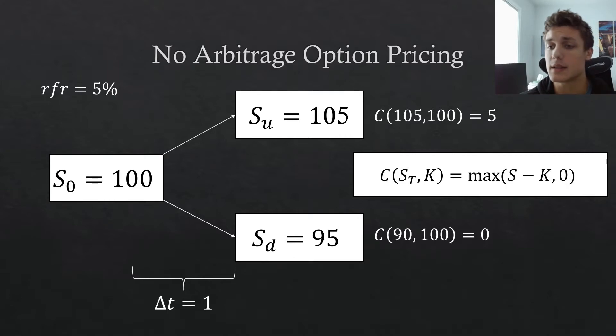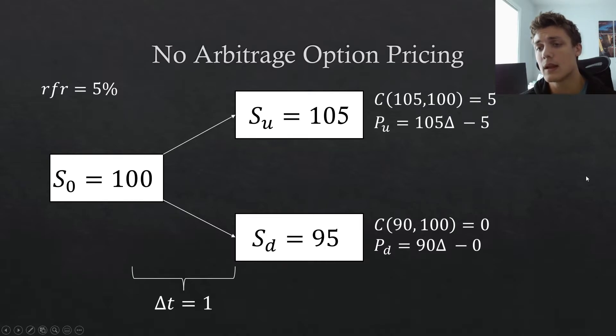So in either state of the world, we can construct the value of this portfolio. If we take a look here, you can see if the stock price increases, then we are going to have 105 multiplied by delta, where delta represents the number of shares in the underlying equity that we own, less five, which is essentially the exercising of the option. And since we're the writer, we lose that.